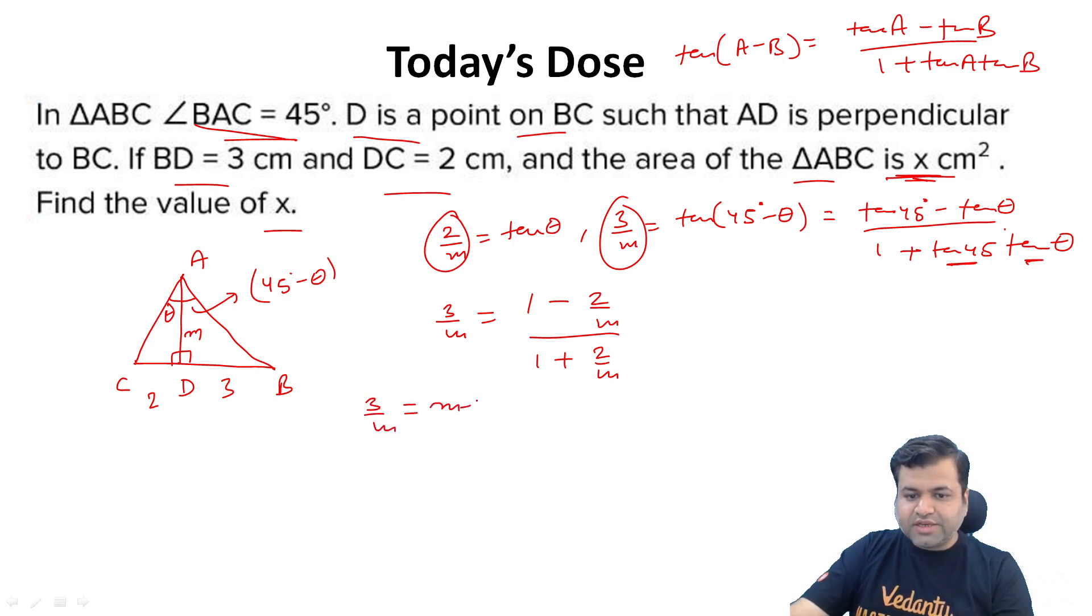So 3 upon m becomes m minus 2 upon m plus 2. Just cross multiply so it becomes 3m plus 6 equals to m squared minus 2m.